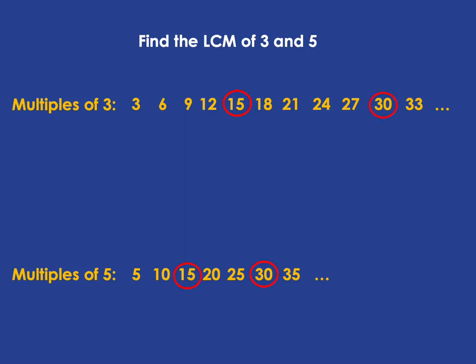15 is in both those lists, and 30 is a common multiple because it's in both those lists — it's a multiple of three as well as a multiple of five. There'll be a whole lot more, but what we want is the lowest common multiple, in other words the smallest of all of these. It's very obvious in this case: the smallest is 15, and so our lowest common multiple of three and five is 15.